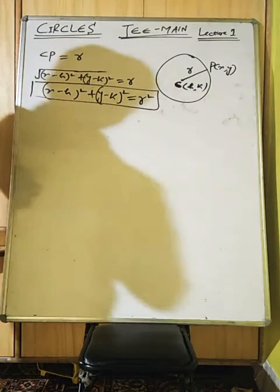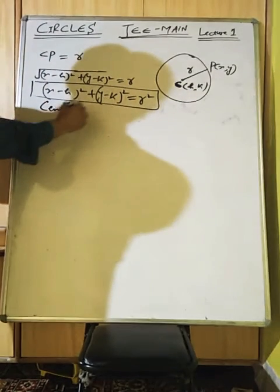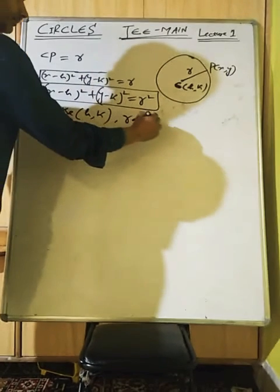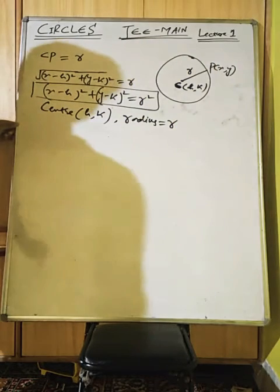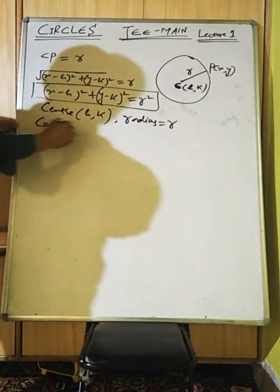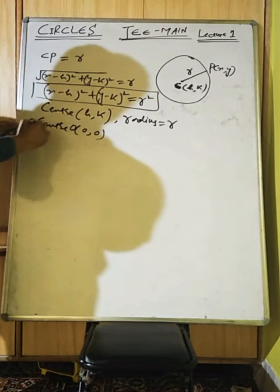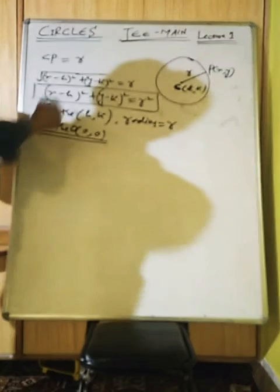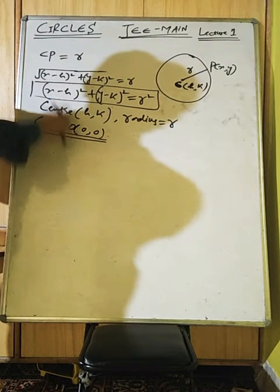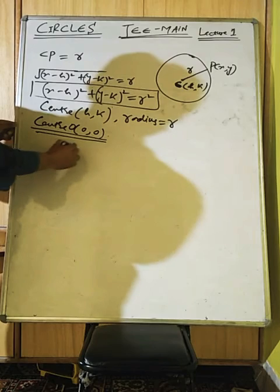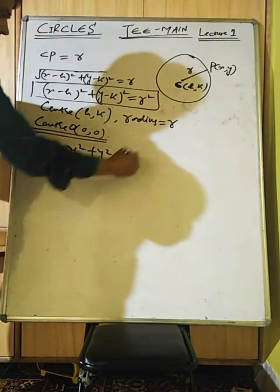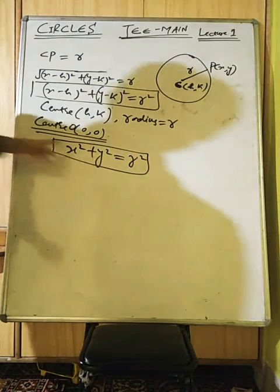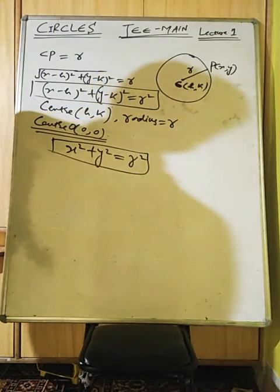So here we have the equation of a circle where center is (h,k) and radius is r. If the center is the origin, it becomes x² + y² = r². This is the equation of a circle with center at the origin and radius r.